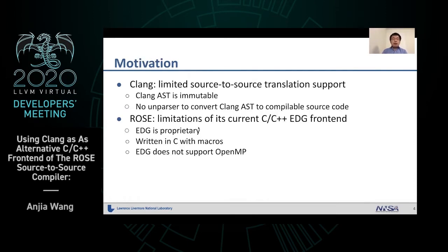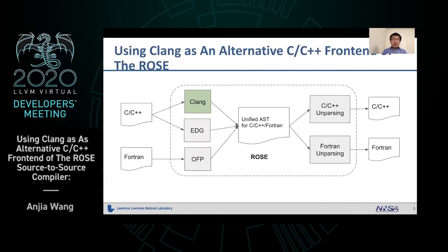Clang is one of the most popular compiler frameworks. However, it has limited source-to-source translation support. No unparser can convert Clang AST to comparable source code. Rose can perform such a transformation. However, its C frontend and EDG is closed source, and EDG does not support OpenMP.